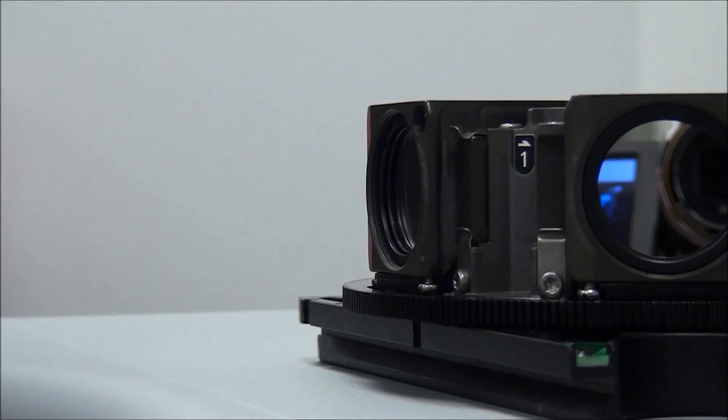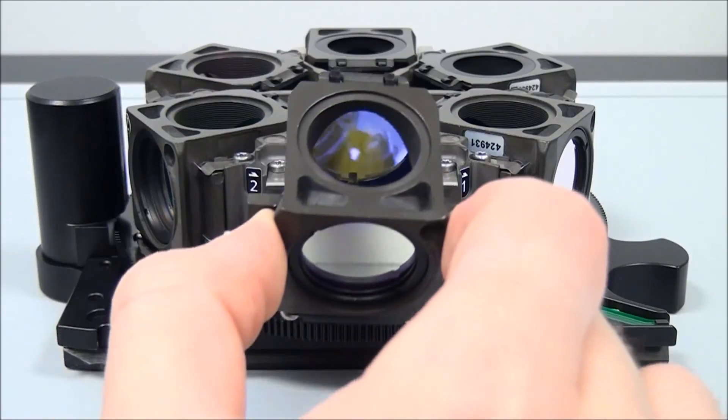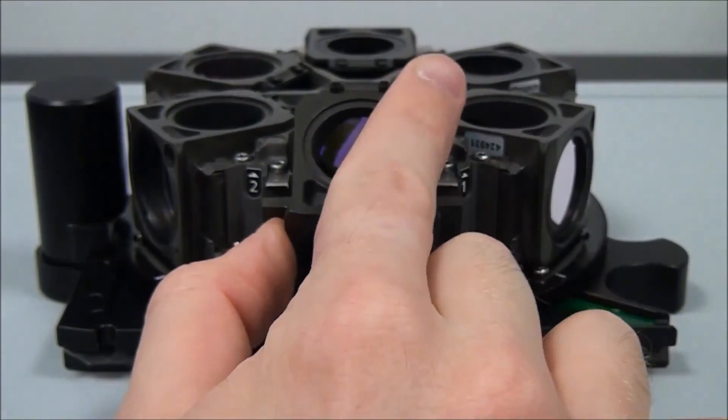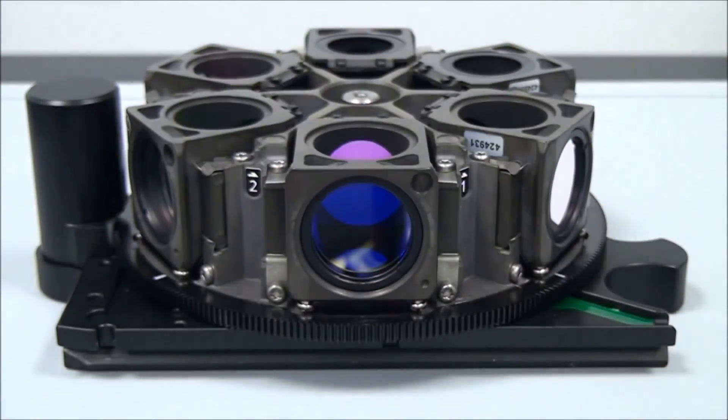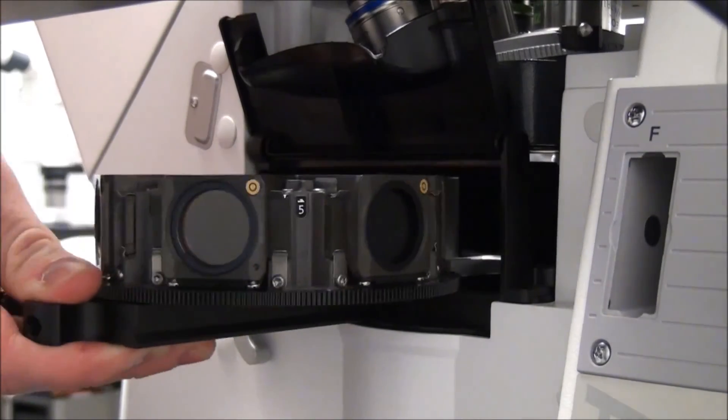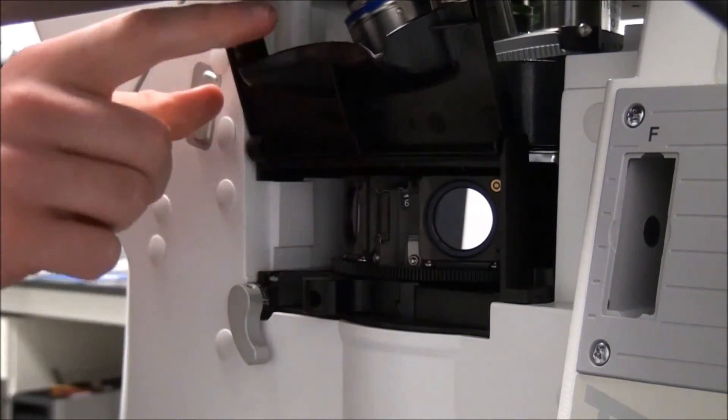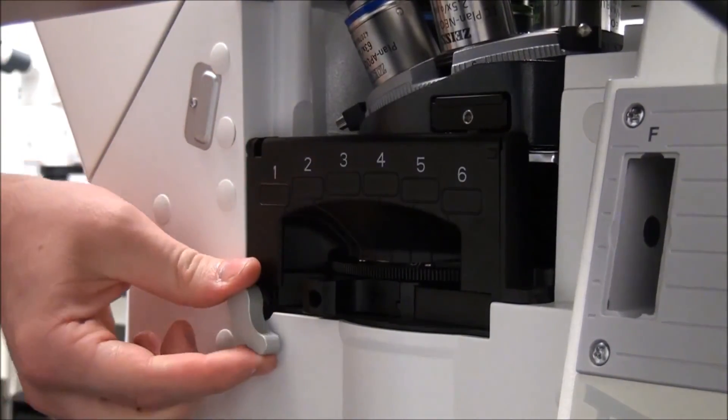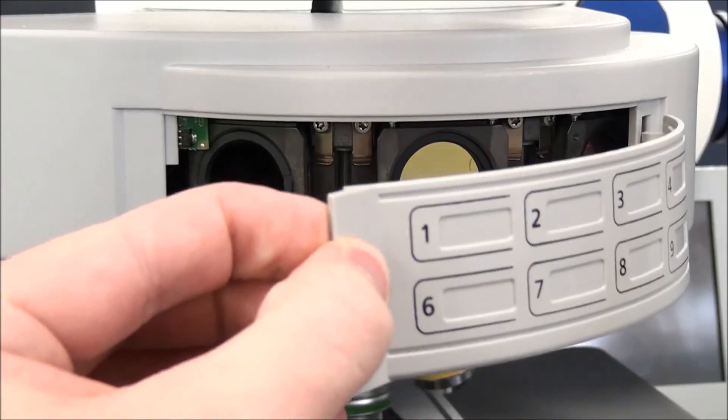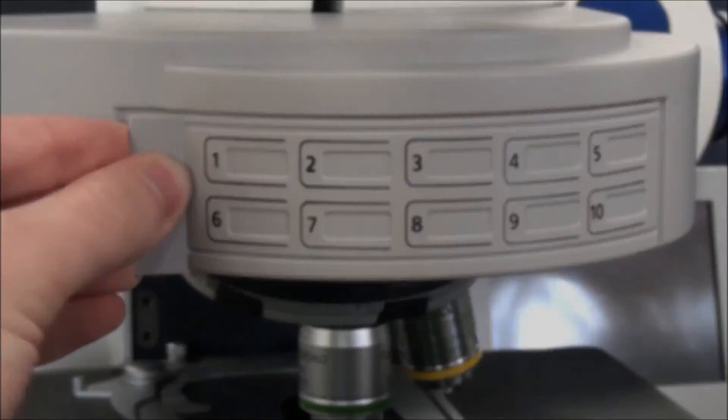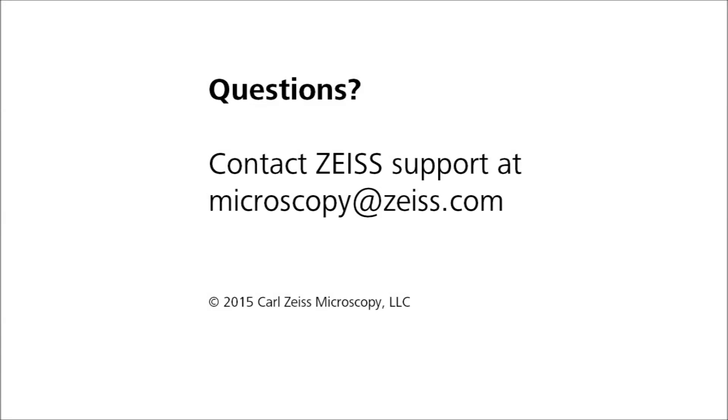Exercise caution when inserting the reflector module so as not to scratch the filters on the metal clips. Replace the reflector turret cover and restart the microscope. You can now begin viewing your samples with the new reflector module. For some stands, it may be necessary to configure the new module into the software. Please contact product and application support for assistance with these steps.